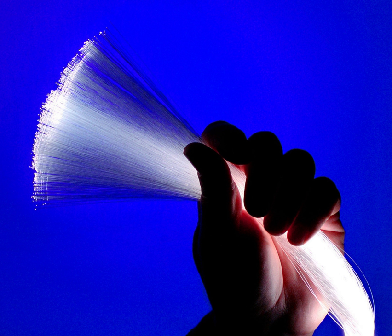A router is an inter-networking device that forwards packets between networks by processing the routing information included in the packet or datagram. The routing information is often processed in conjunction with the routing table or forwarding table. A router uses its routing table to determine where to forward packets.